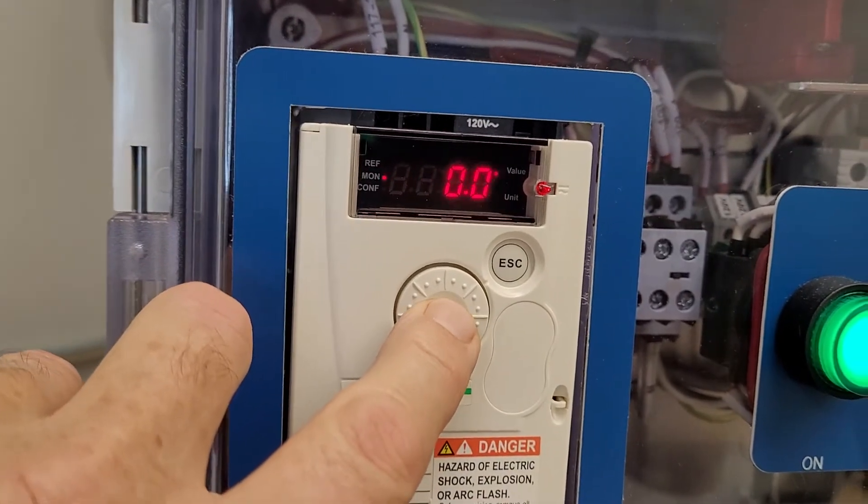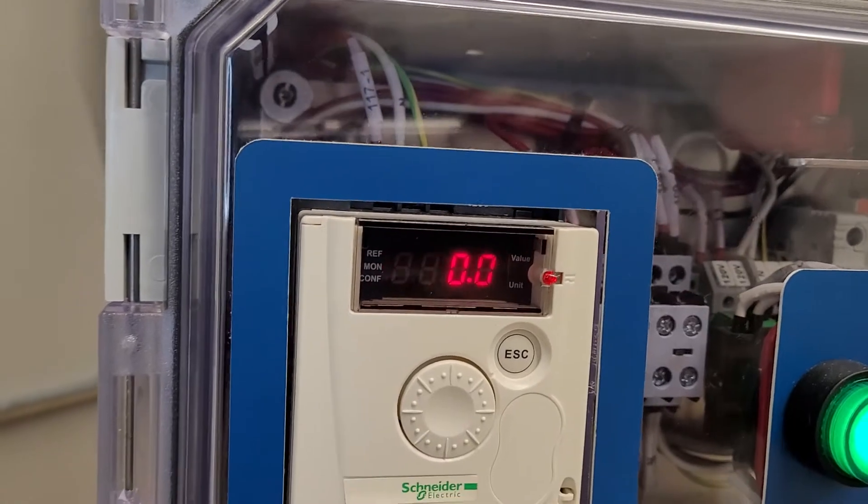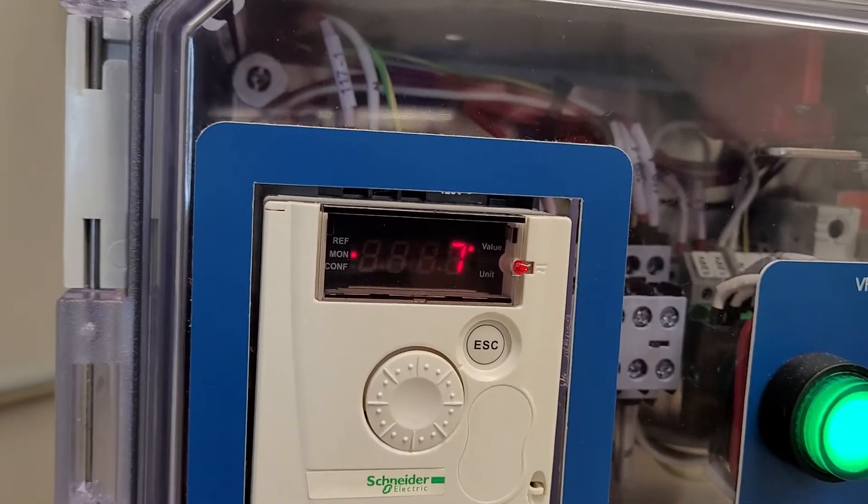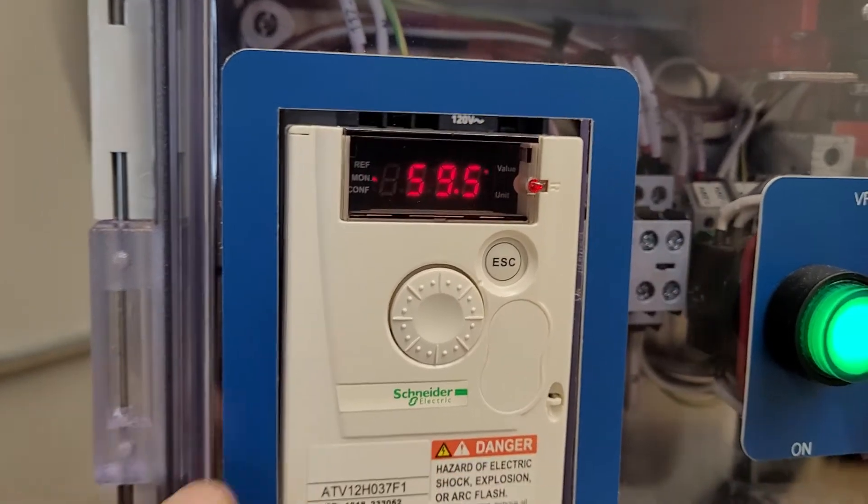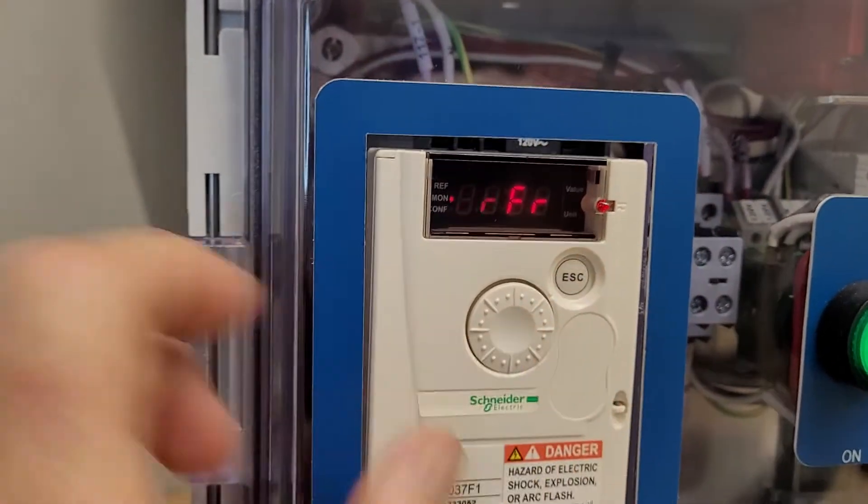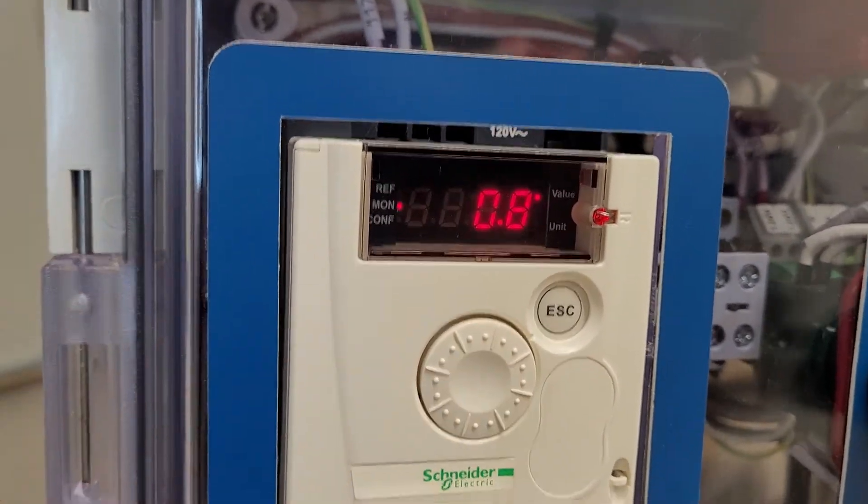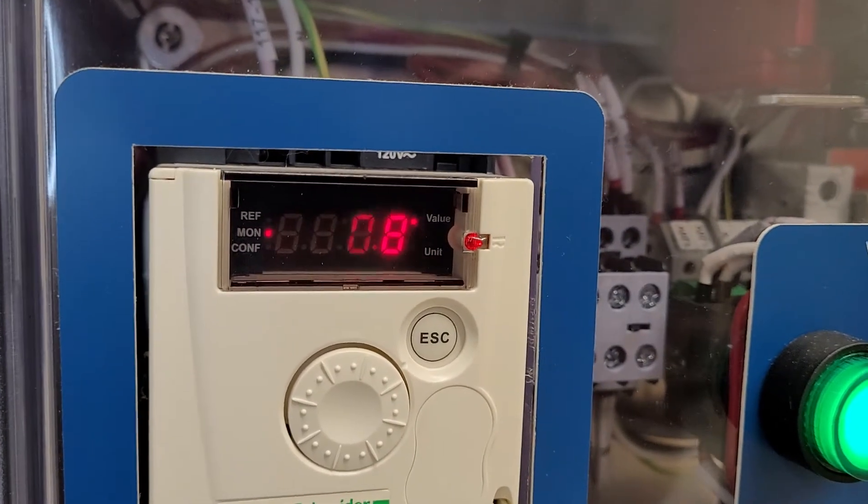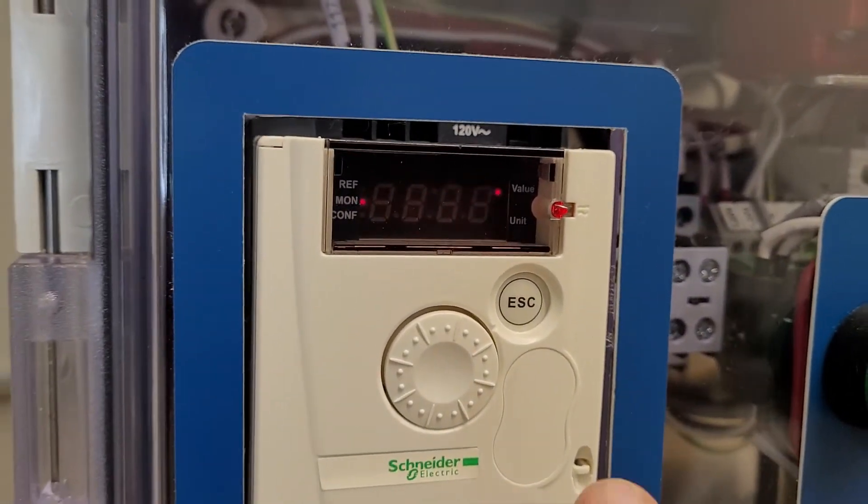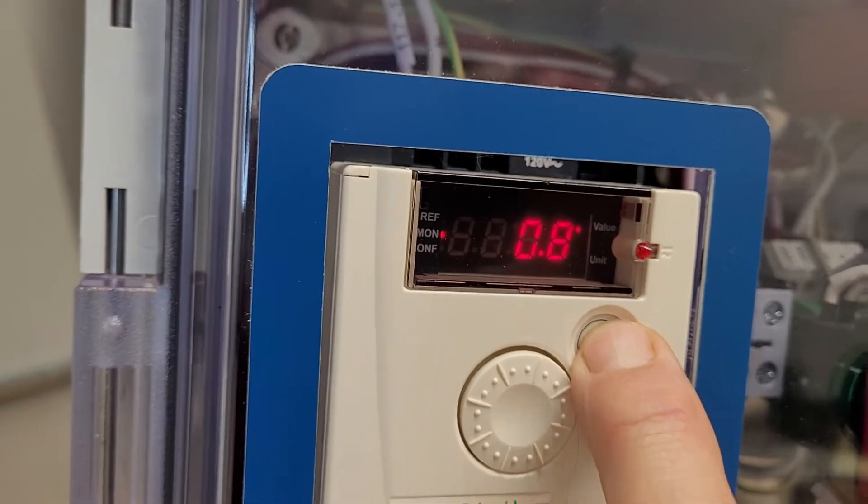The first one is the reference speed of the motor right now, or the output speed. I am going to start it running and you will see that change. We will just set that around 60 hertz. I will hit escape. And then the next one down is the motor current, which is very useful. You can determine what is going on in the field if the motor is loaded around 0.8 amps. That is pretty standard for a 1/3 horsepower that is not loaded.